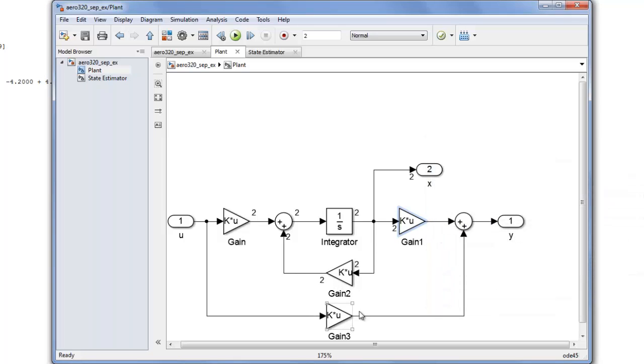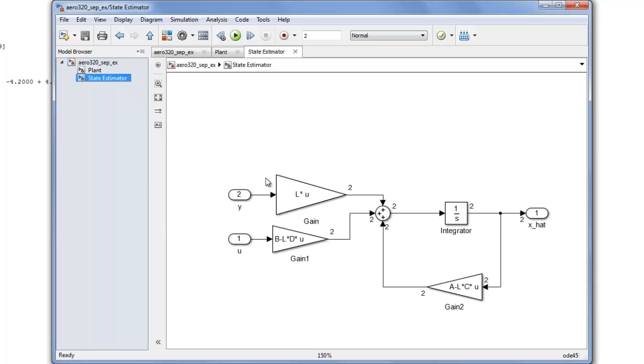Notice this is the state equation over here, and then this is the gain C, and this is D, so that's the output equation. So this here represents your state space representation of the system.